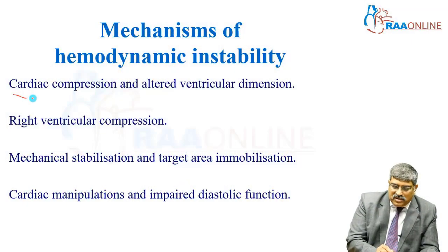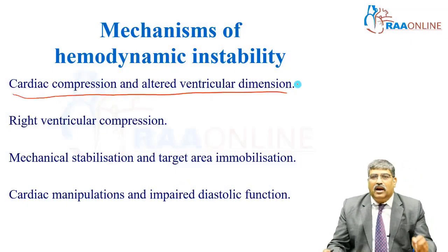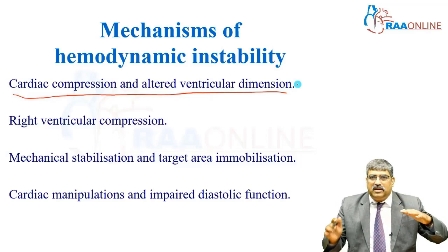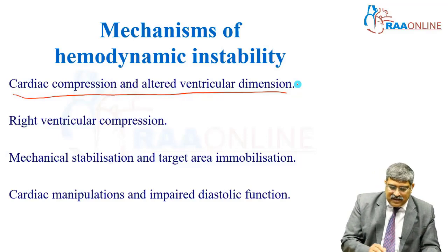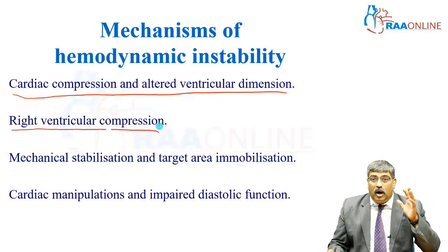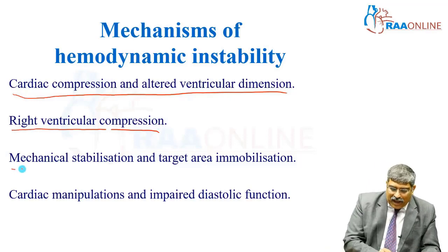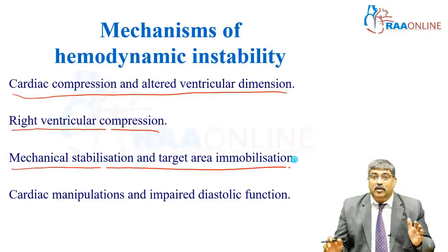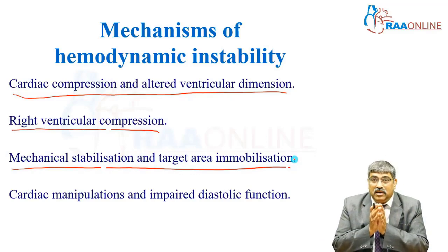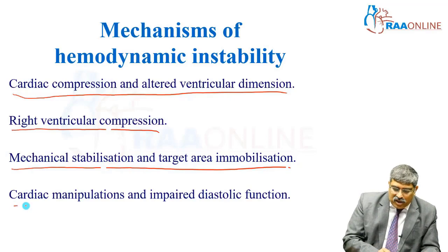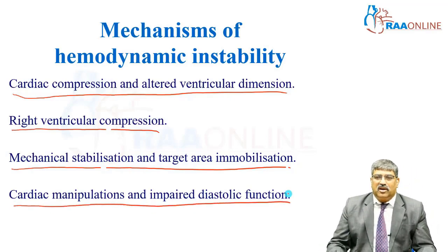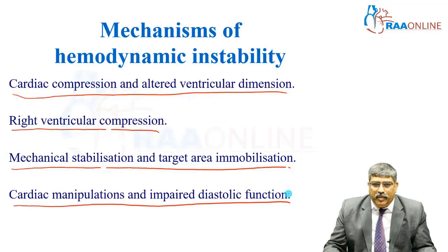The first and foremost cause of hemodynamic instability is cardiac compression and arterial ventricular dimension caused by the octopus and starfish suction apparatus, right ventricular compression which is very important during obtuse marginal grafting, mechanical stabilization and target area immobilization which can alter left ventricular systolic and diastolic function, and cardiac manipulation which impacts diastolic function.